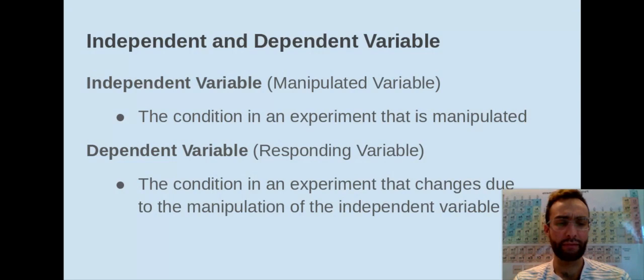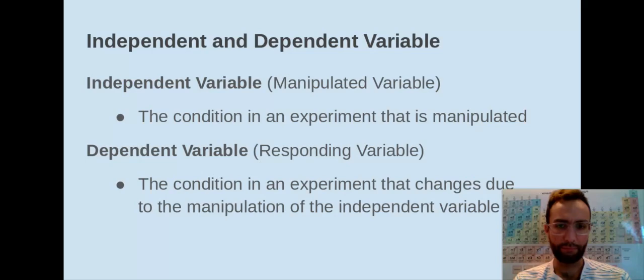We're going to start by discussing the independent versus the dependent variable. The independent variable is also known as the manipulated variable. It's the condition in an experiment that is manipulated. It's the thing that's being changed.